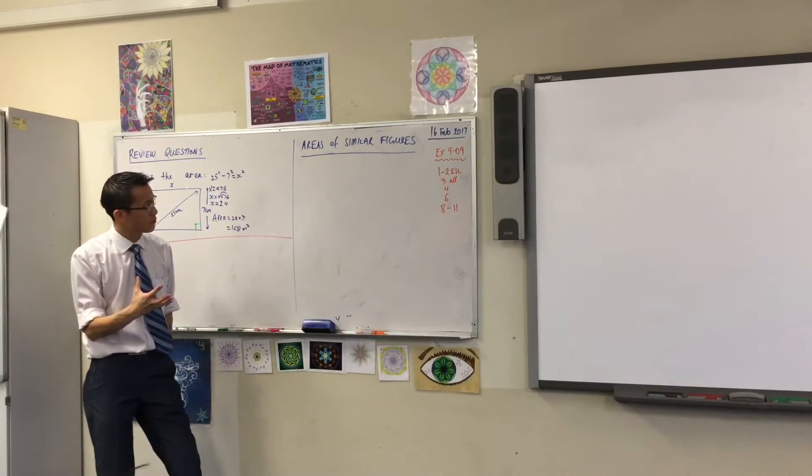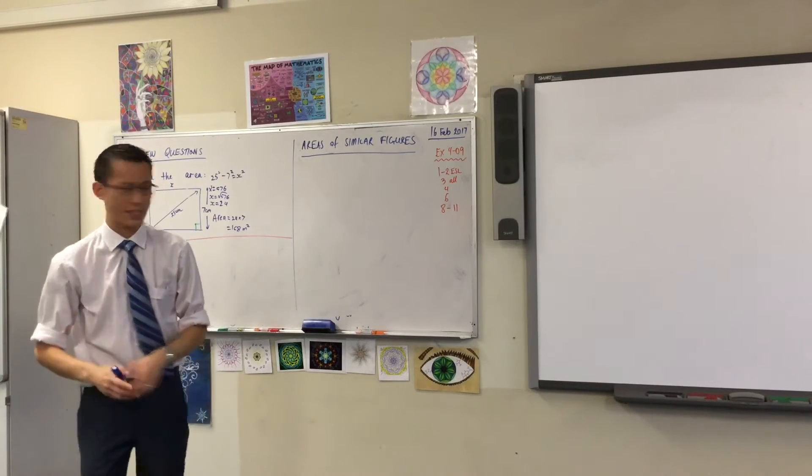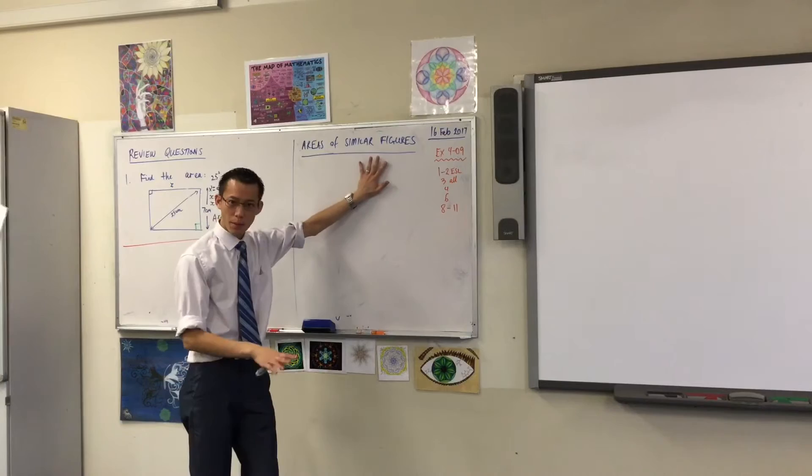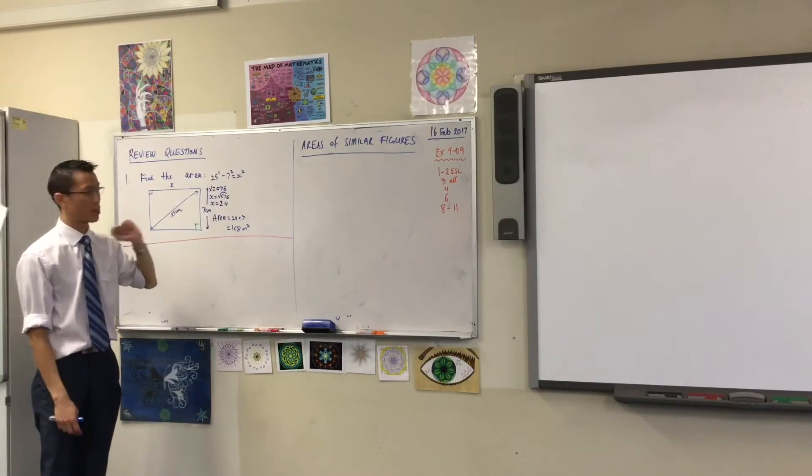We're still in the surface area and volume topic. We're sort of stepping back a little bit to shapes that exist in 3D. We're going to get to 3D shapes again, but to simplify things, we're going to look at 2D shapes like the one that we did in the first review question today.